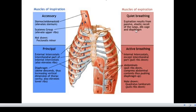During active breathing, the muscles involved in expiration include the internal intercostal muscles and the abdominal muscles. These pull the ribs down, compress the abdominal contents, and therefore push the diaphragm up. There is also what is called the quadratus lumborum, which also pulls the ribs down.